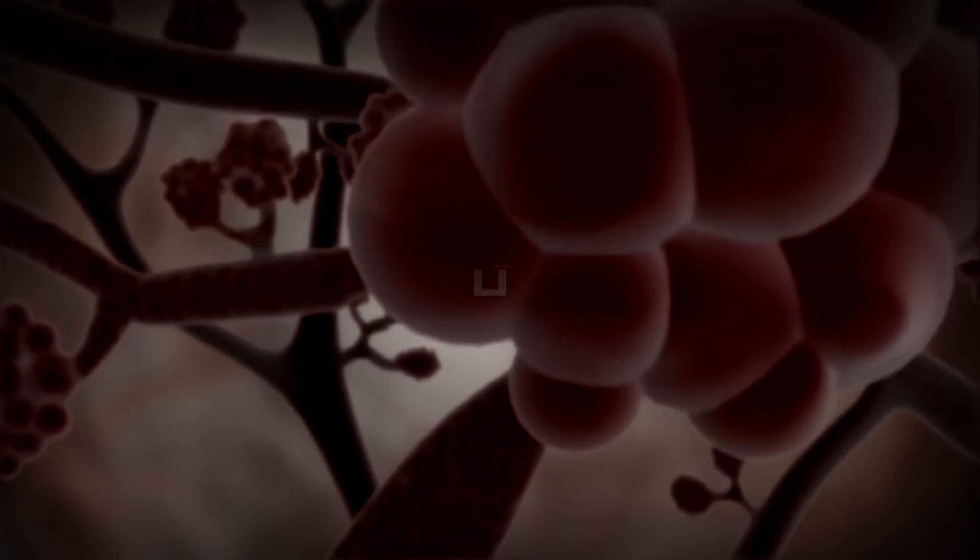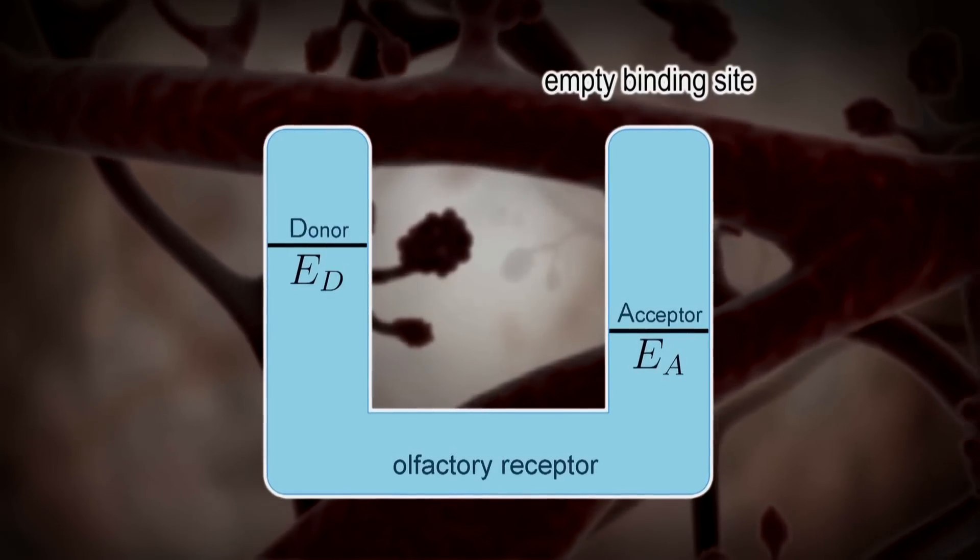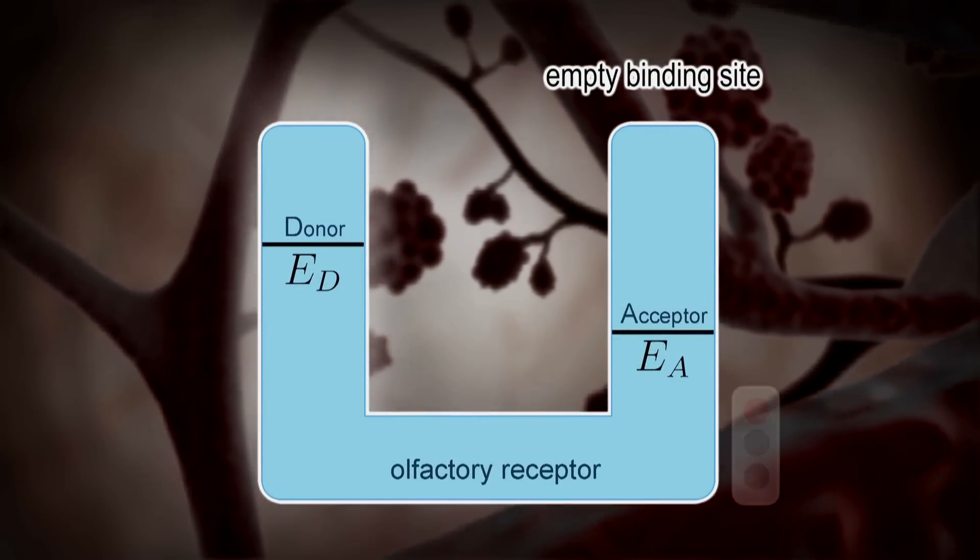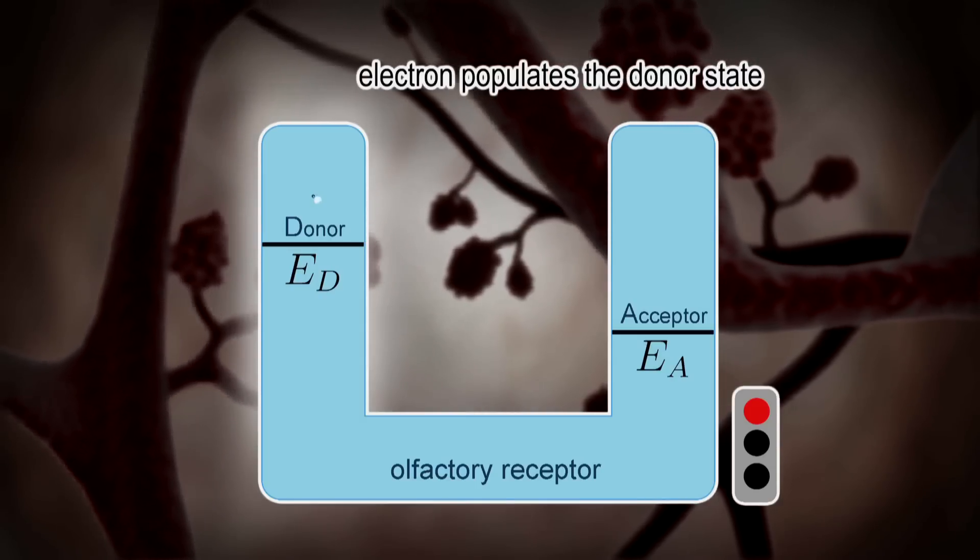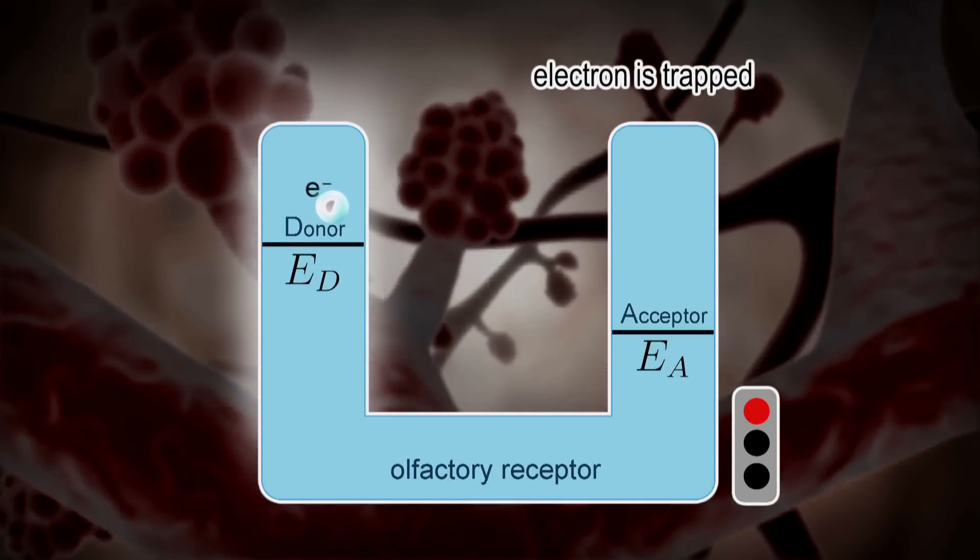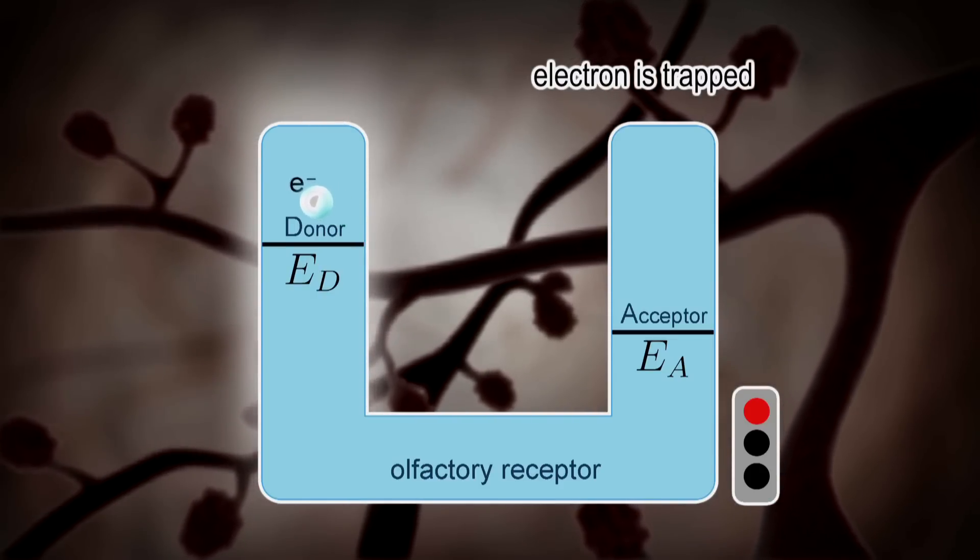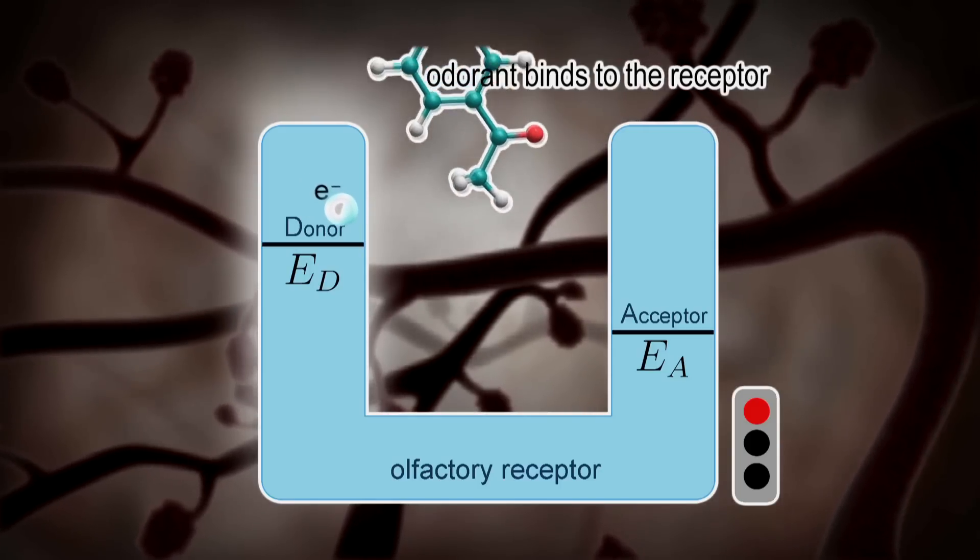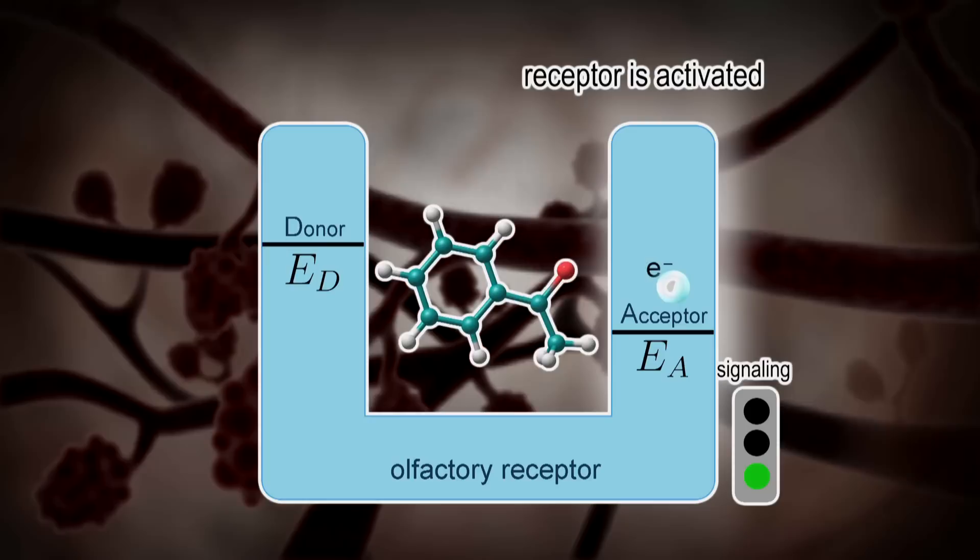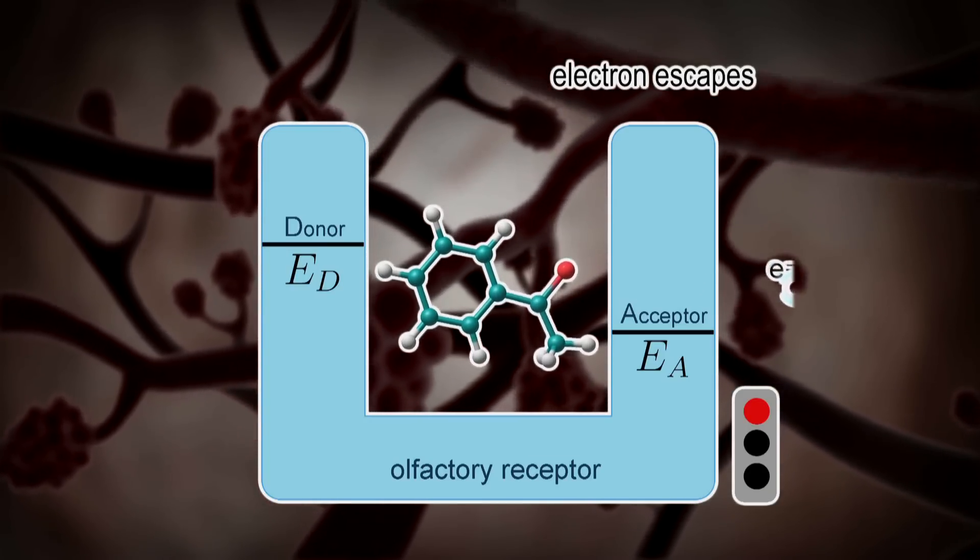The idea is actually very simple. Imagine an olfactory receptor without an odorant molecule inside. It is believed that the receptor has two sides, a so-called donor side and an acceptor side. The donor side initially has an electron which tries hard to get to the acceptor side. This transfer is hardly possible without the presence of an external molecule because of the energetics of the receptor. But once an odorant molecule is bound with a receptor it vibrates at certain characteristic frequencies and this vibration assists the electron tunneling from the donor to the acceptor.